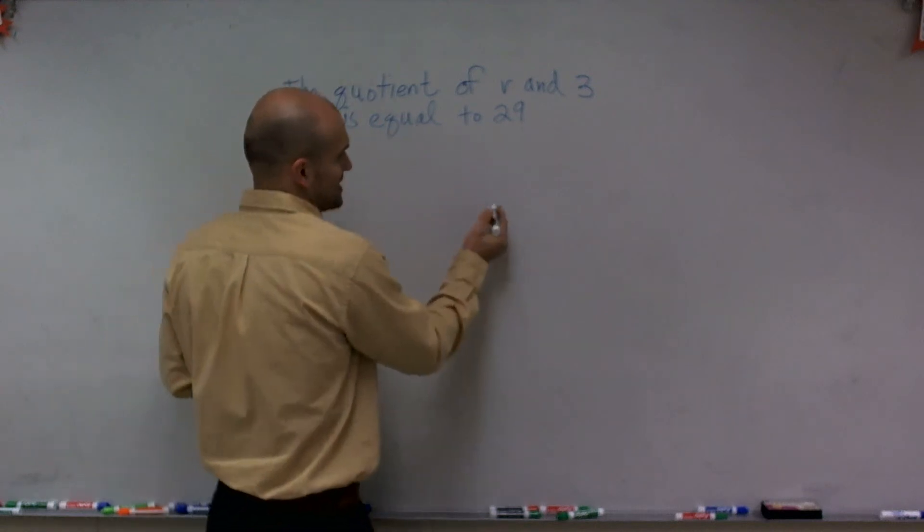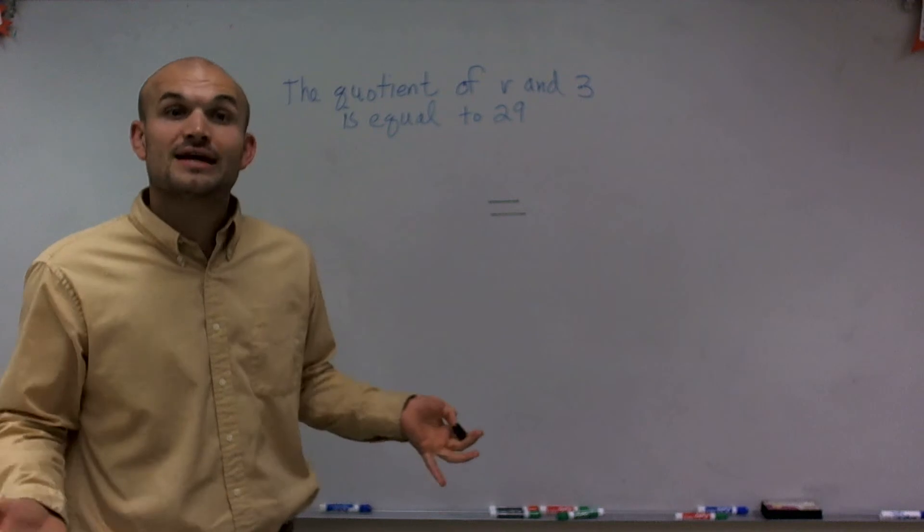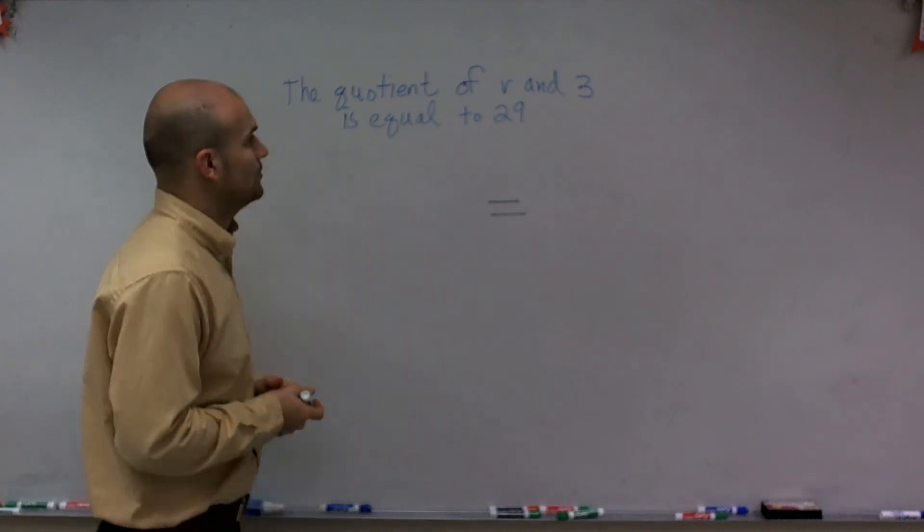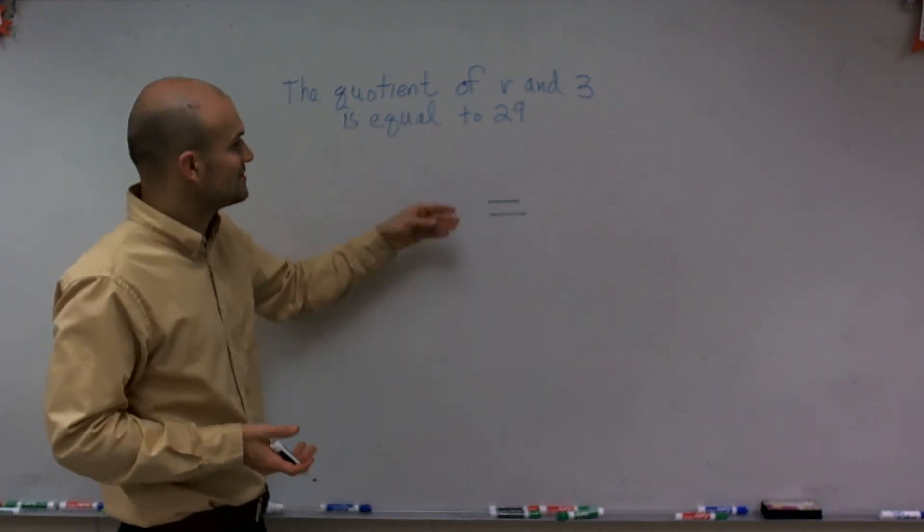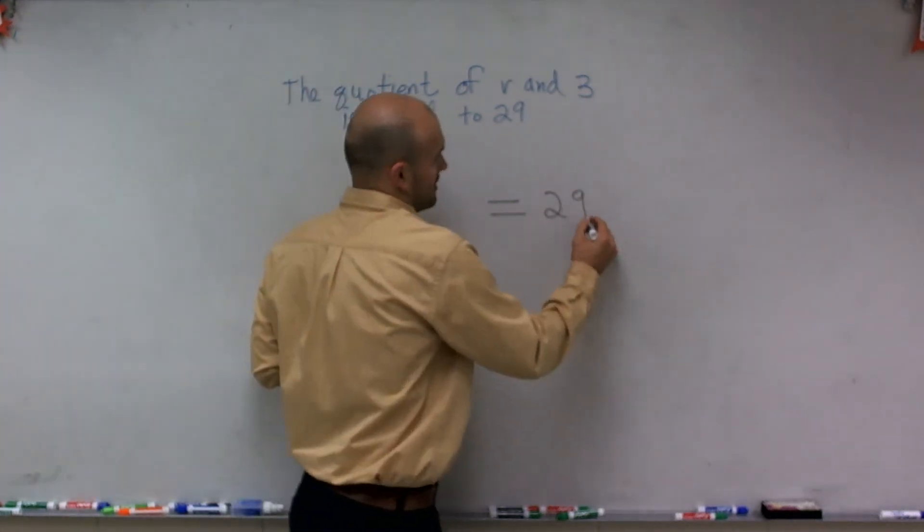Since I see the equal sign, that's the first thing when trying to draw up an algebraic equation—you want to make sure you have that equal sign in there. We can work backwards here. It's going to be equal to the value of 29, so I'm going to write 29.